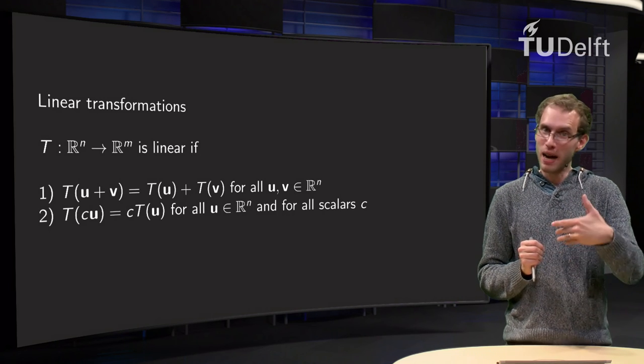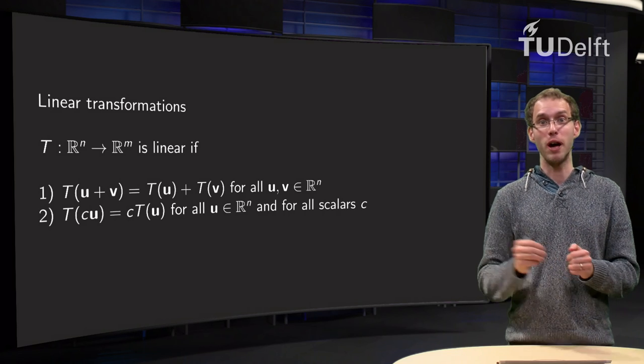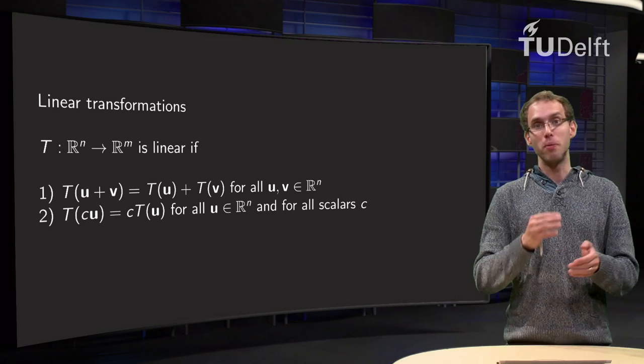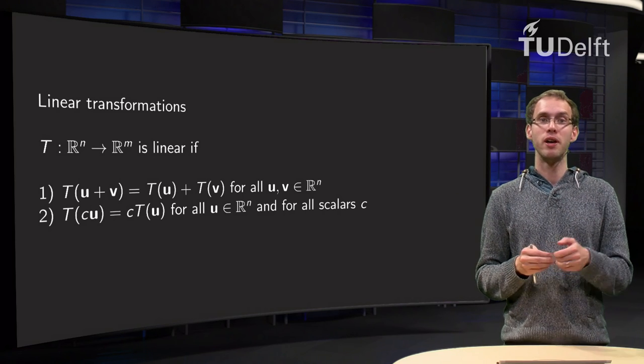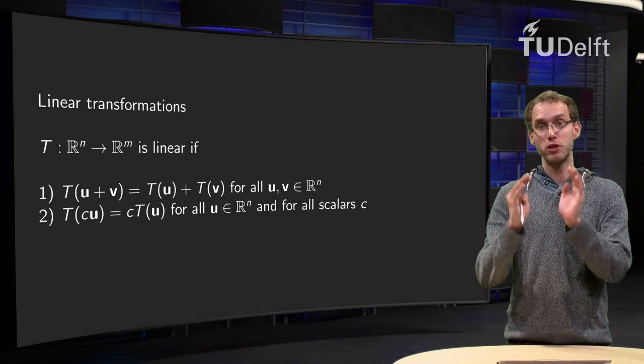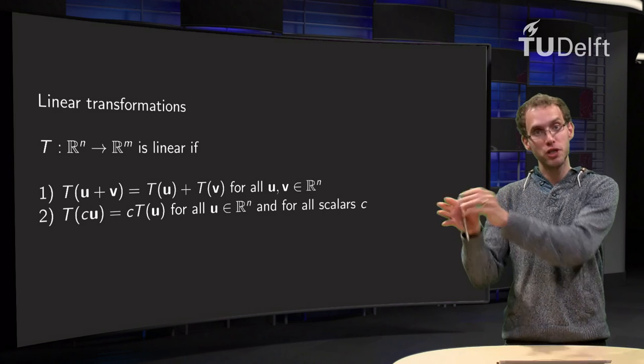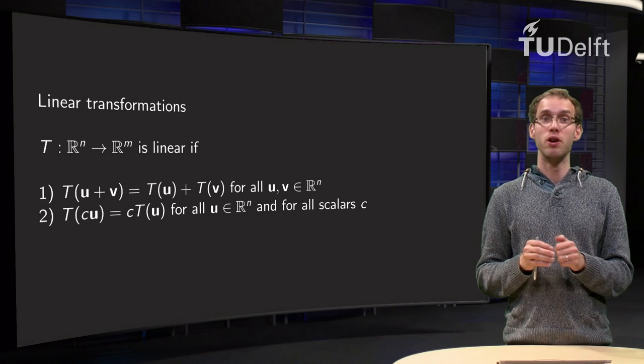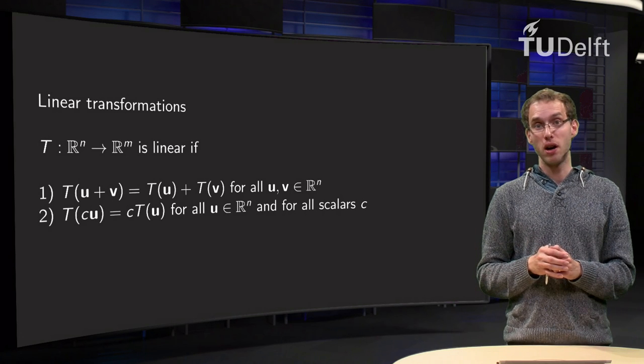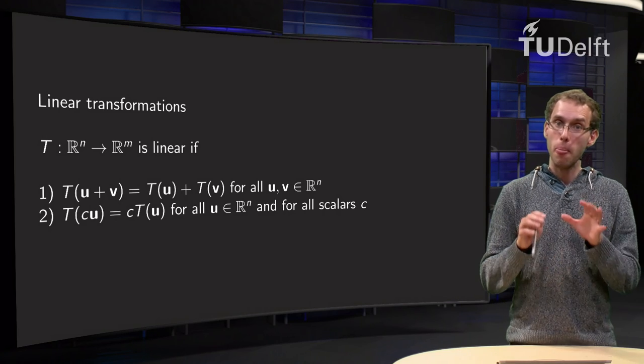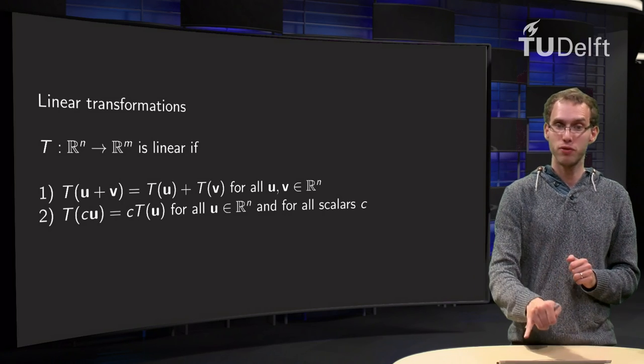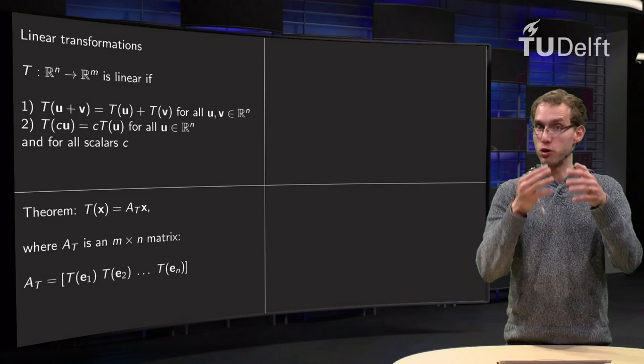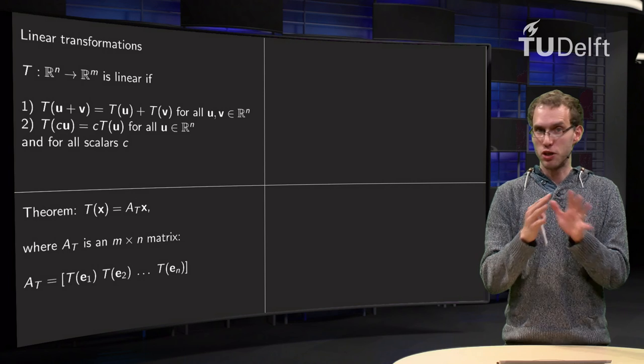Let us first look back at linear transformations from R^n to R^m. A transformation T from R^n to R^m is linear if it satisfies two properties: T(u + v) = T(u) + T(v), and T(cu) = c·T(u) for all u and v in R^n and for all scalars c. That was what we have learned about linear transformations from R^n to R^m, where by the way the domain may also be a subset of R^n.